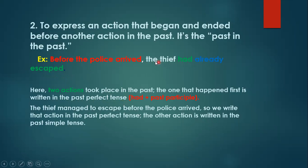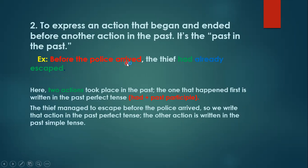So the thief had already escaped — this action started and ended before the police arrived. Here we have two actions both taking place in the past, but one happened first, which is written in the past perfect tense. The thief managed to escape before the police arrived, so escaping is expressed in the past perfect tense, and the other action is written in the past simple. The second usage is to express an action that started and ended before another action in the past: one in past perfect, the other in past simple.